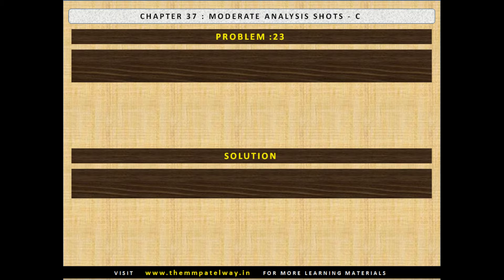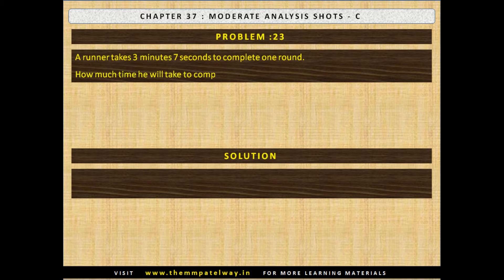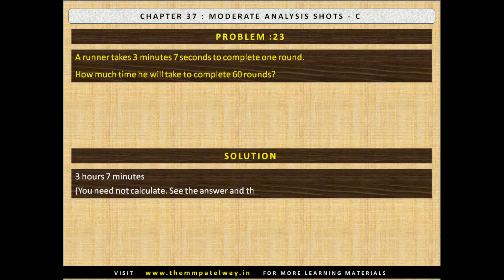Problem No. 23. A runner takes 3 minutes 7 seconds to complete one round. How much time will he take to complete 60 rounds? The solution is he will take 3 hours and 7 minutes. See the answer and think how you can get the answer without calculating.